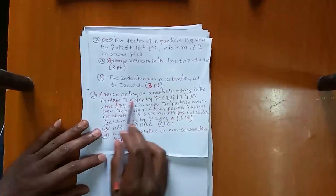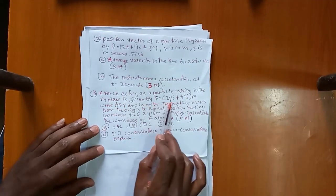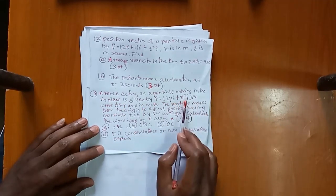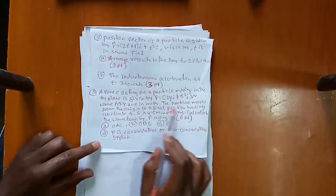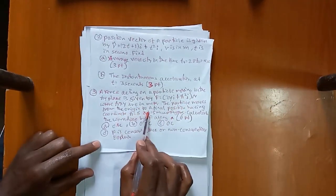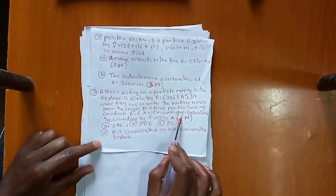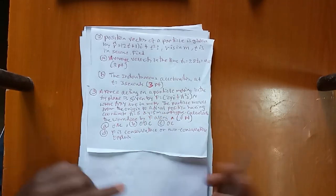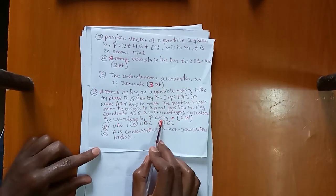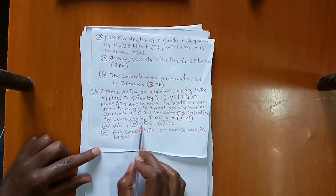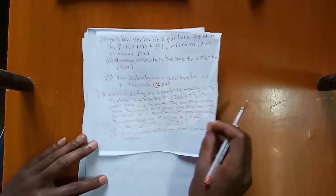Now for the next problem: a particle moving in the xy-plane has force F equal to 2y·i plus x²·j, where x and y are in meters. The particle moves from the origin to the final position with coordinates x equals 5, y equals 5. We need to calculate the work done along paths OAC, OBC, and OC, and determine if the force is conservative or non-conservative.